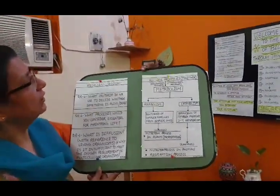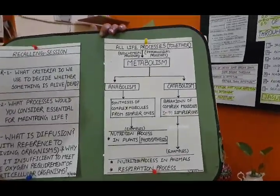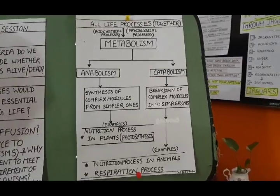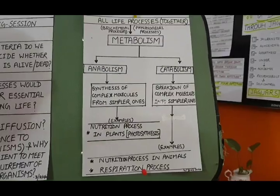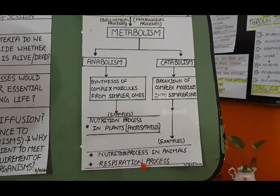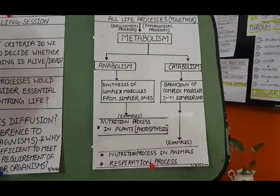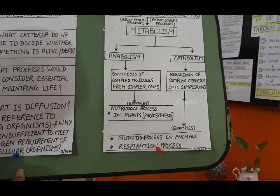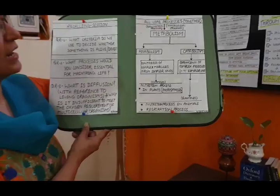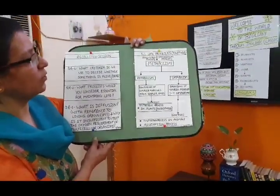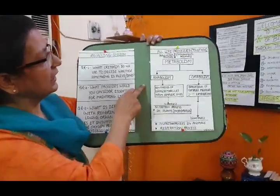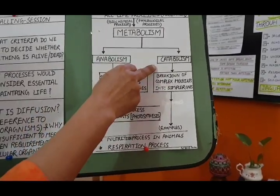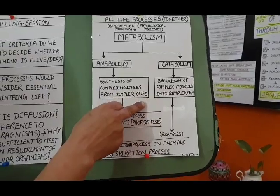In this chapter, I will start with Metabolism, which is a new term. It is simply the summation of all the life processes — all life processes in a living organism together are known as Metabolism, also called biochemical or physiological processes. Metabolism is of two types: anabolism, in which synthesis of complex molecules from simpler ones takes place, and catabolism, which is the breaking of complex molecules into simpler ones.